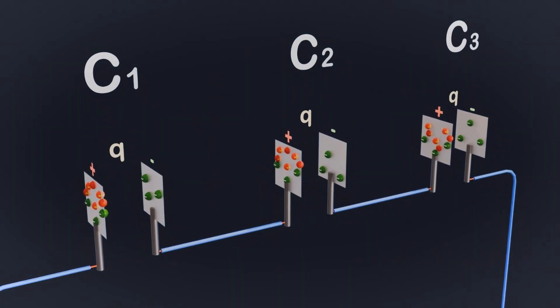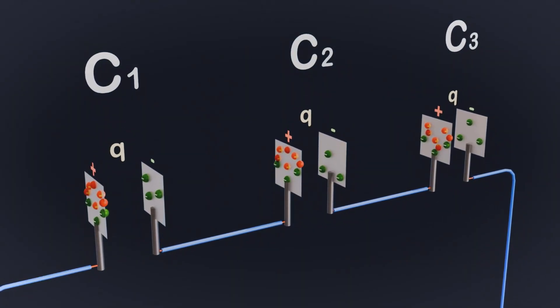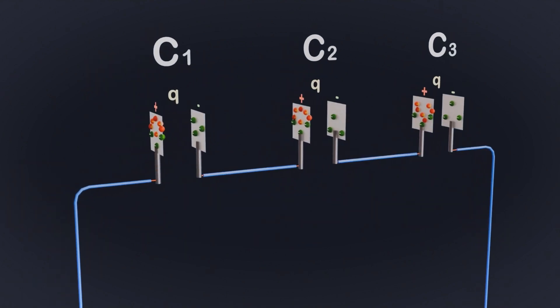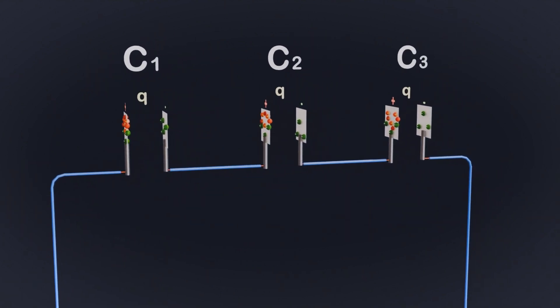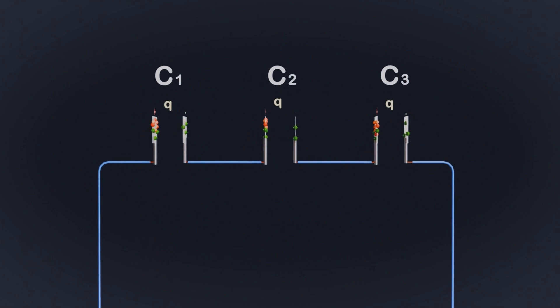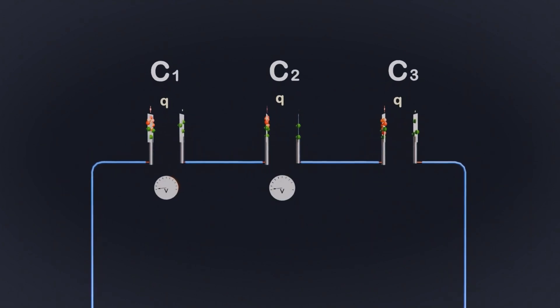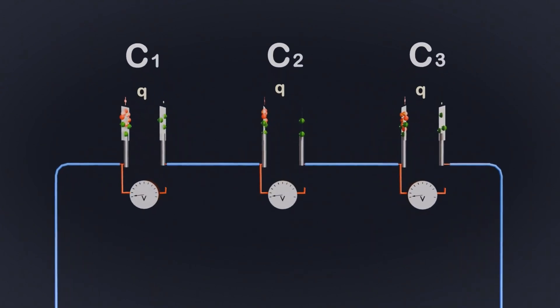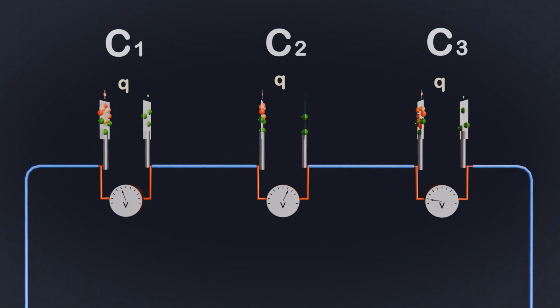Here's an important point to note. All capacitors in a series combination have the same charge, Q. While the charge Q is the same for all, the voltage is different based on their capacitance across each capacitor. We can express this as voltage across capacitor C1, V1 equals Q by C1, voltage across capacitor C2, V2 equals Q by C2, voltage across capacitor C3, V3 equals Q by C3.